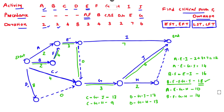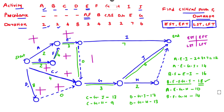Now we find EST, EFT, LST, and LFT for each activity. We put plus marks on all activities to record these four values. Starting from the beginning, EST = 0 and EFT = 0 + 2 = 2 for activity A. The EFT of a preceding activity becomes the EST of the succeeding activity.